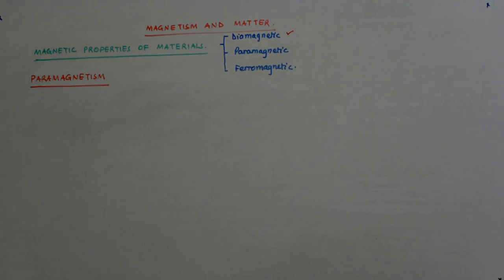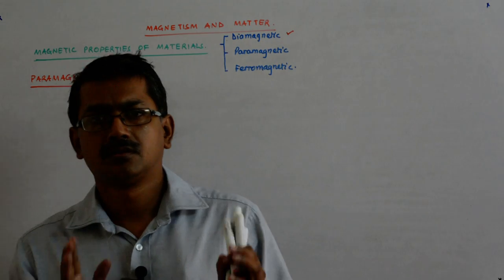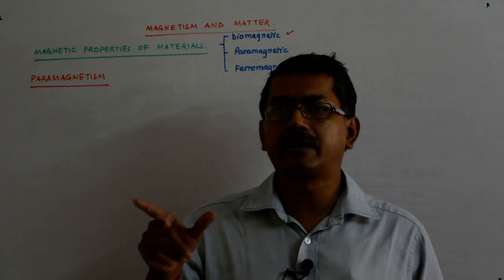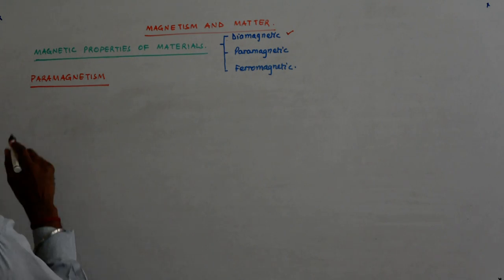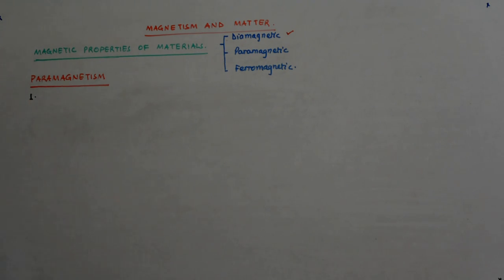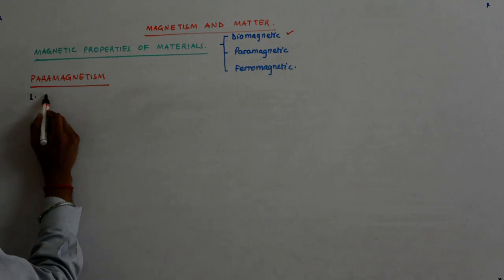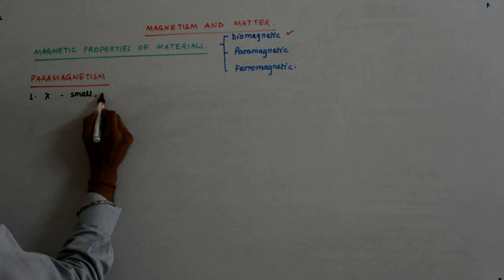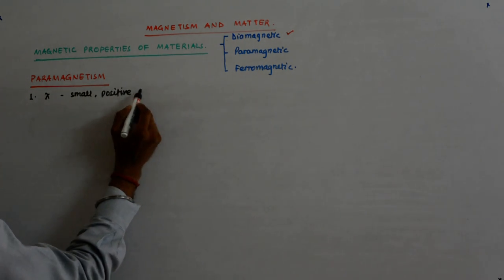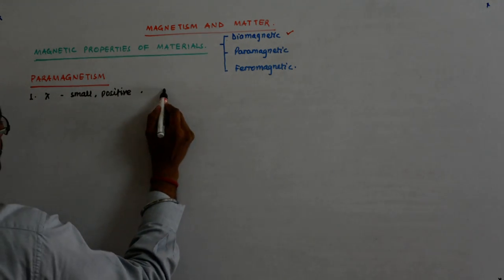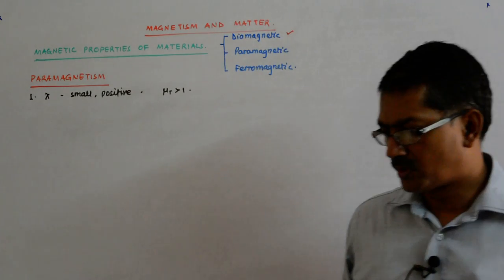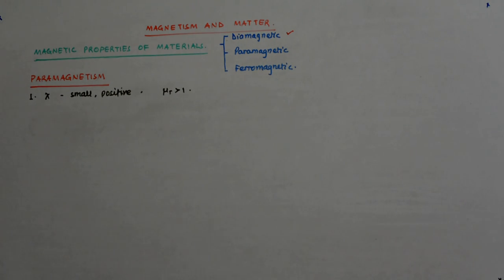We just saw that paramagnetic materials are those in which the field developed inside the material is supportive of the external field. The first thing is that chi is small but positive. So what happens to mu r? Mu r is greater than 1. Due to that, the field inside becomes more.